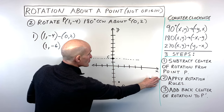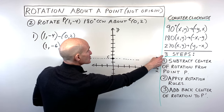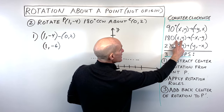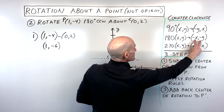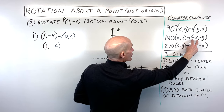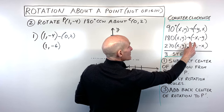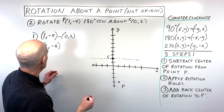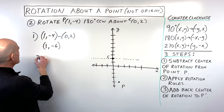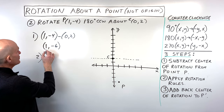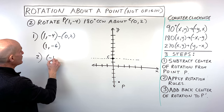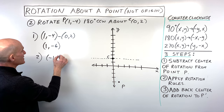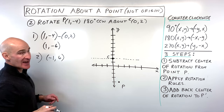Step 2: apply the rotation rules. For 180 degrees, we keep x and y in the same order but make them the opposite sign. So (1, -6) becomes (-1, 6) — the signs flip.